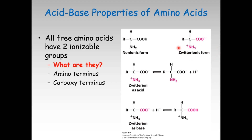This is called the zwitterionic form. The non-ionic form represents amino acids as NH2 and COOH, whereas in the zwitterionic form, you express it as NH3+ and COO−.